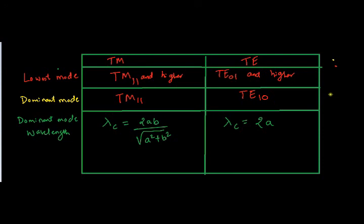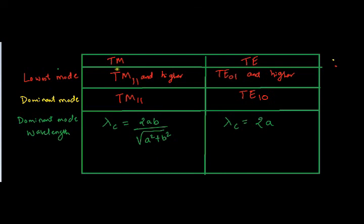The dominant mode wavelength — that is, for m equal to 1 and n equal to 1 — the corresponding wavelength expression will be 2ab divided by the square root of a² + b². For TE waves, the cutoff wavelength will be 2 times a. If we compare TM and TE, lambda_c for TE mode is greater than lambda_c for TM.